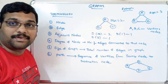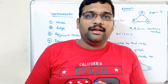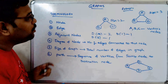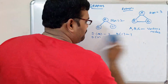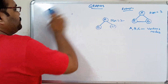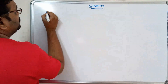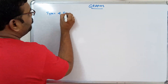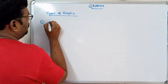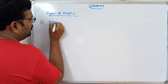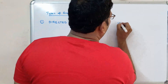So these are the basic terminologies — graph is a set of vertices and edges. Now we'll go with the different types of graphs. The first type is directed graph and undirected graph.